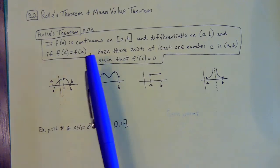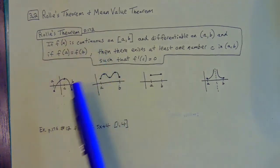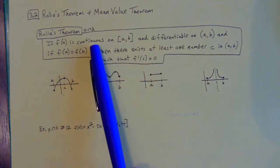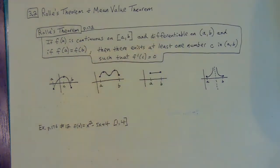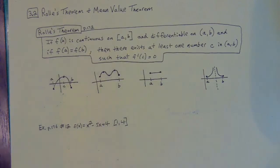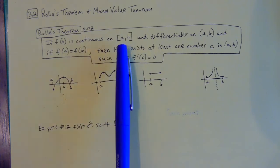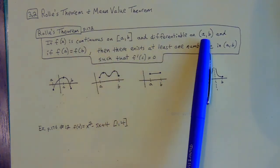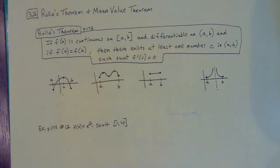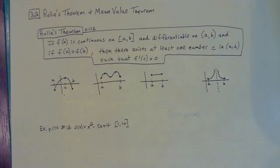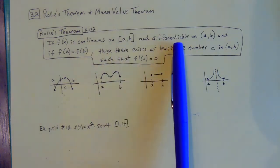Rolle's Theorem has three stipulations that must all be true. First, it has to be a continuous graph — no breaks, no jumps; you can't lift up your pen when drawing it. Second, it has to be differentiable, meaning smooth and curvy. It's not differentiable if you have an asymptote or a sharp corner point, because of multiple tangent lines. You'll always see continuous on the closed interval and differentiable on the open interval, because at the endpoints themselves the graph is typically not differentiable.